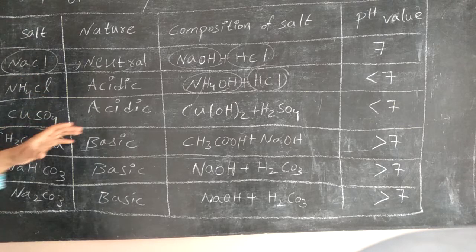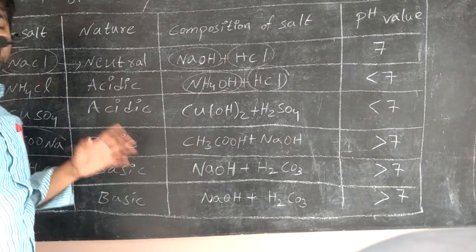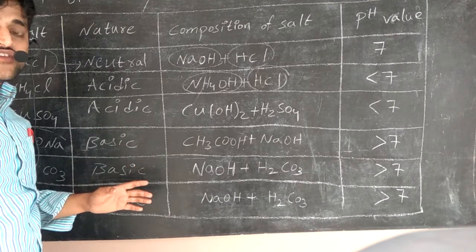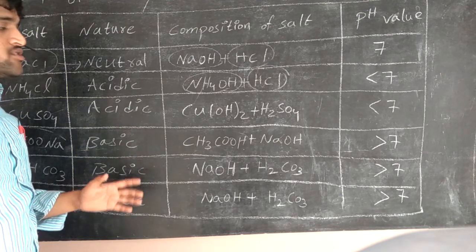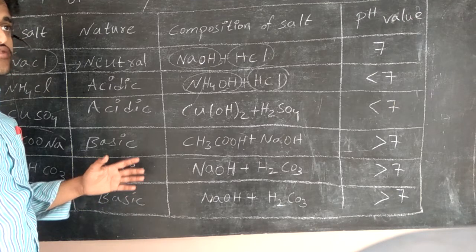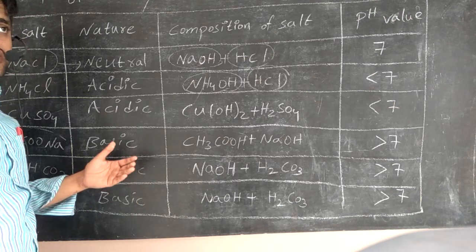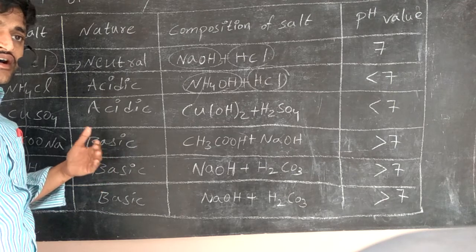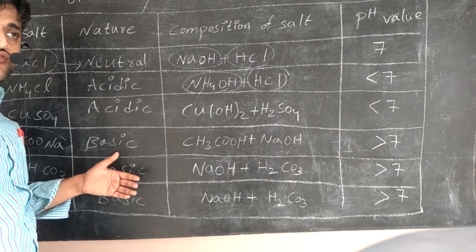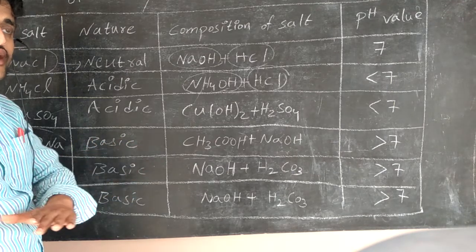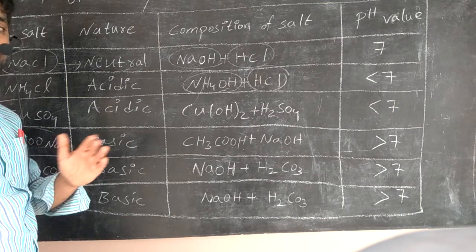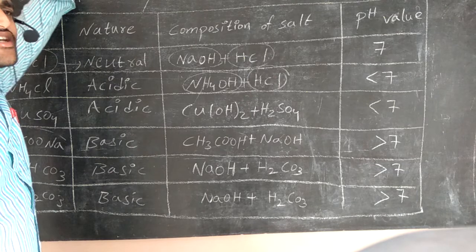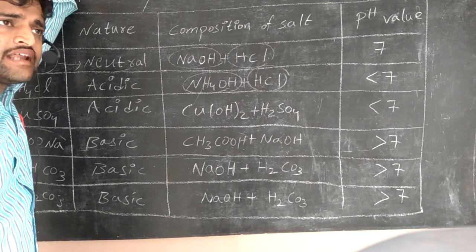The digestion process starts in the mouth. That's why the pH value is more after a meal — because a sufficient amount of food has been taken. The pH value is higher after a meal compared to before a meal. So pH plays a prominent role in our daily life.